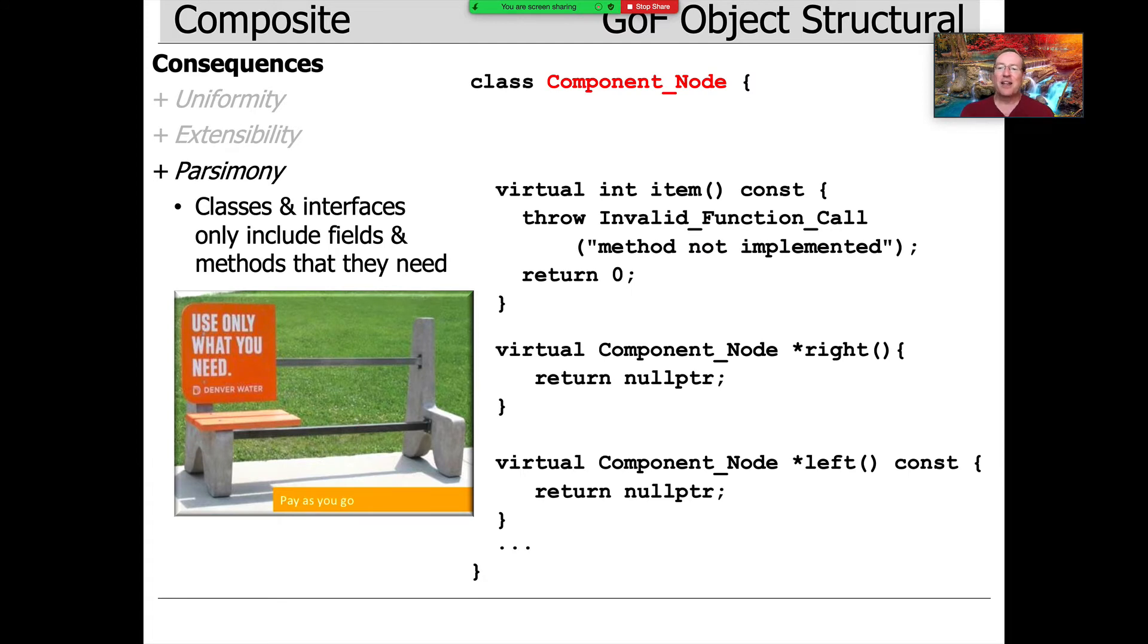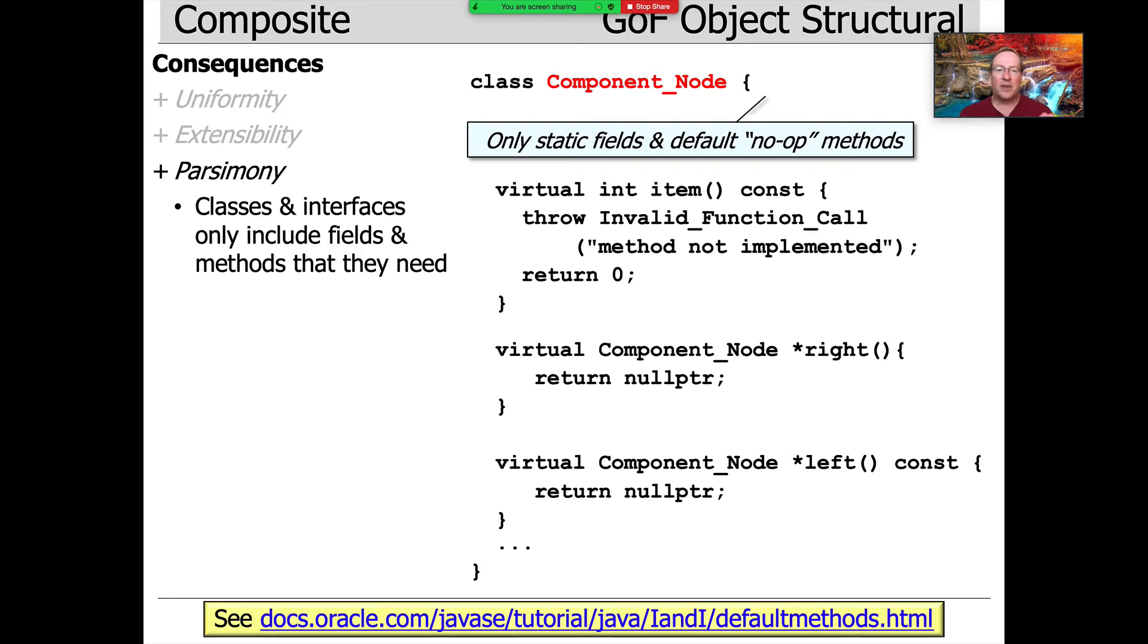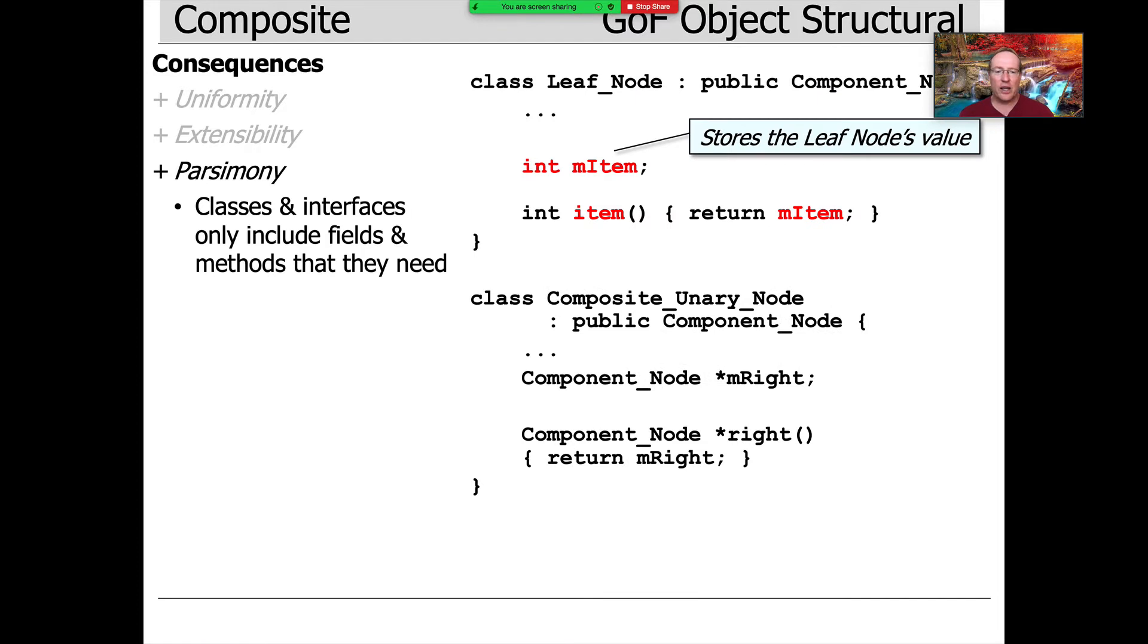Yet another thing, classes and interfaces only have to include fields and methods that they actually need or they actually use. There's an insurance company called Liberty Mutual and their tagline is, only pay for what you need. And I think that's a great tagline here because that's exactly what we're doing here. We're only going to have to implement things that we actually use at a given level of abstraction. So here's our component node. That's the interface class, the abstract base class. And as you can see, it only defines no-op methods and static fields. It doesn't have anything else. It just has the bare bones needed to hold everything together.